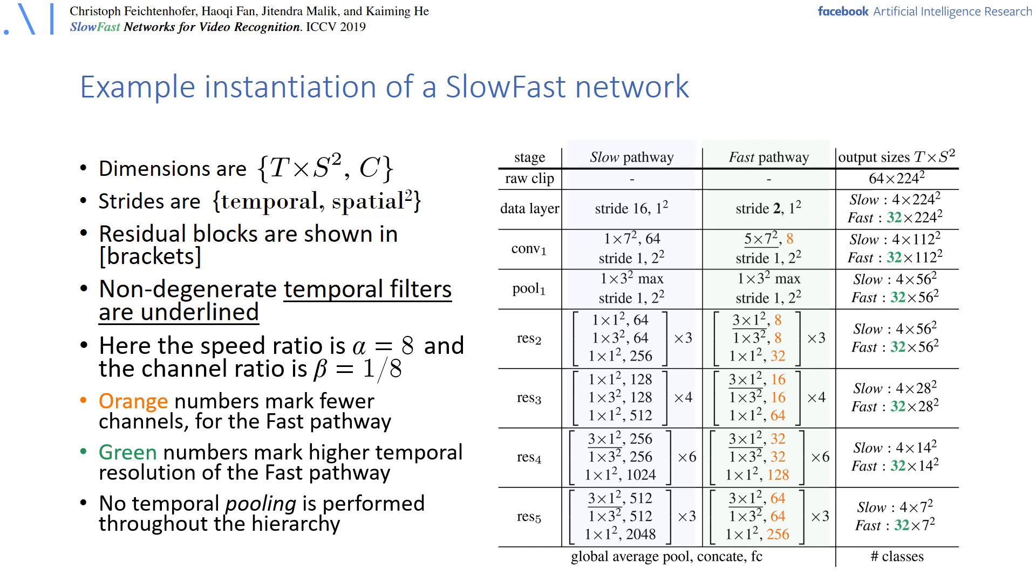Finally what we show here is the output sizes of each stage. You can see that the temporal dimension in the input is 64 frames times 224 squared spatial size, and then the slow and the fast pathway have 4 frames and respectively the fast pathway is 32 frames. This is held constant throughout the network, which means there is no temporal pooling that is applied throughout the network. The spatial resolution is downsampled up to the last layer where its global average pooled and classified into number of classes.